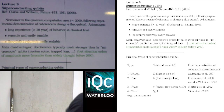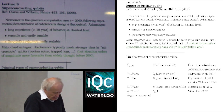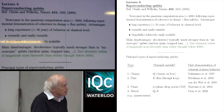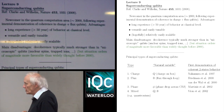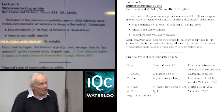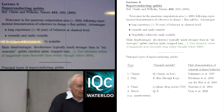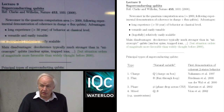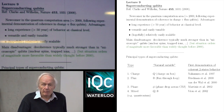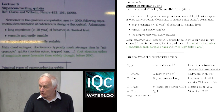Superconducting qubits are a newcomer to the general area of quantum information and quantum computation. The turning point came around 1999 or 2000 when it became clear that not only so-called charge qubits, but also the alternative flux qubits, could be prepared in a way which had sufficiently low decoherence to make it at least look promising.